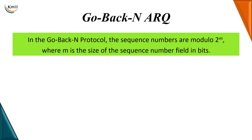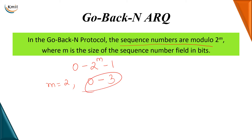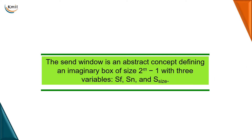Go-Back-N ARQ makes use of sequence numbers that are modulo 2^m, just as the Stop-and-Wait ARQ protocol used modulo 2. Here also, the range of sequence numbers is from 0 to 2^m − 1. For example, if m = 2, the sequence numbers range from 0 to 3: 0, 1, 2, 3 — and they wrap around again.